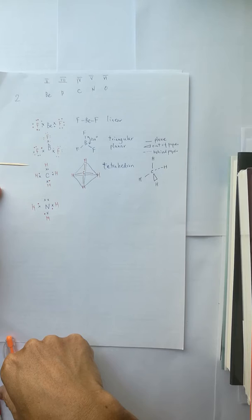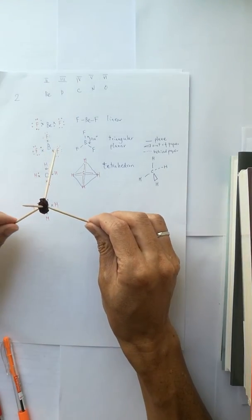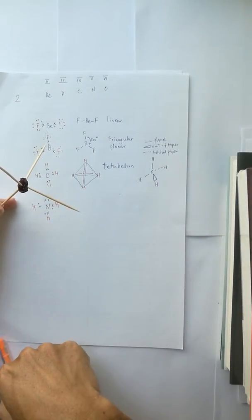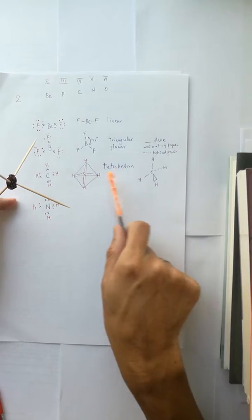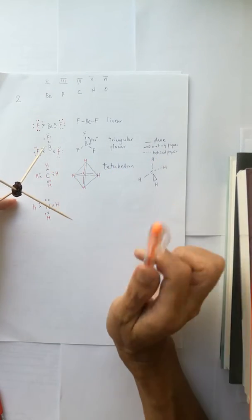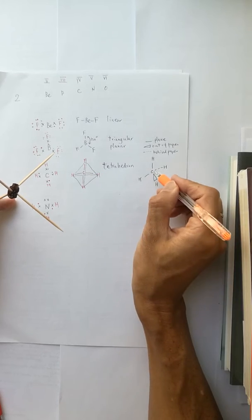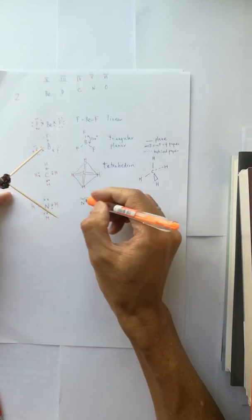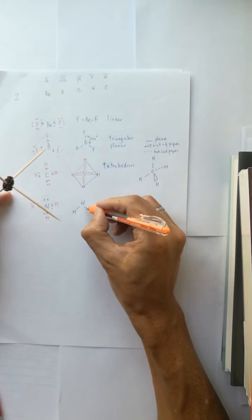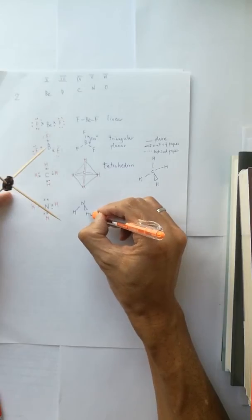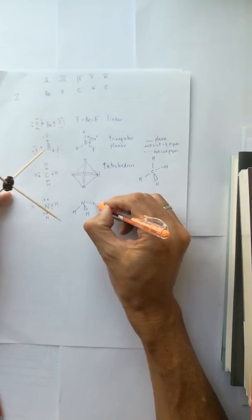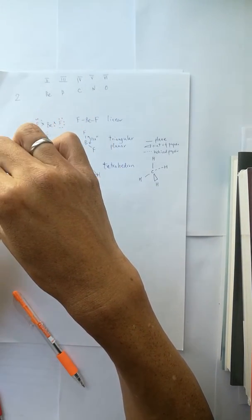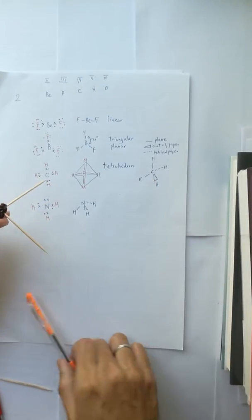When you consider the ammonia, it is just like CH4 arrangement with the center nitrogen, and then one H, another H, and the third H. Now the fourth H is replaced by not an atom, it is by the lone pair electron.